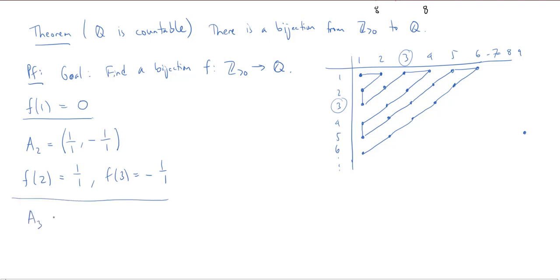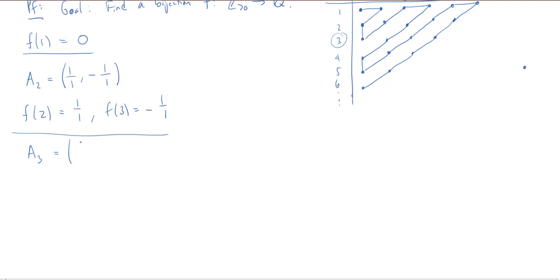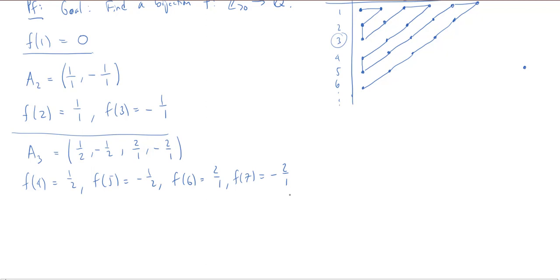Next, I define A sub 3 in the same way, except now I want the numerator and denominator to add up to 3. To make an ordered list, I'm going to order them — forgetting about the negatives — in increasing order. With numerator and denominator adding to 3 using positive integers, it's either 1 over 2 or 2 over 1, in that order because a half is less than 2 over 1. Then I also need the negative versions. So F of 4 is 1 half, F of 5 is negative 1 half, F of 6 is 2 over 1, and F of 7 is negative 2 over 1.